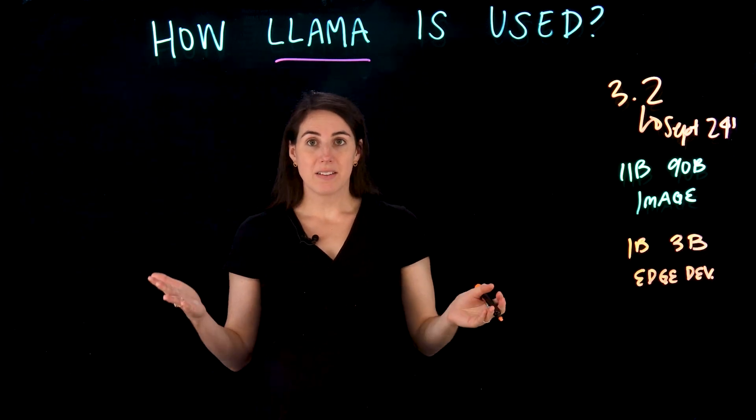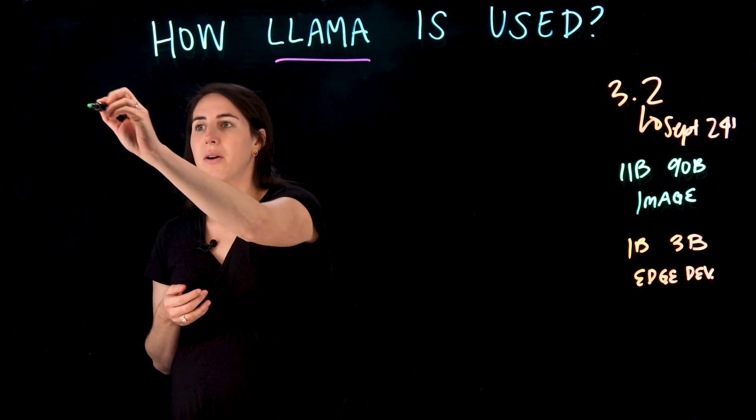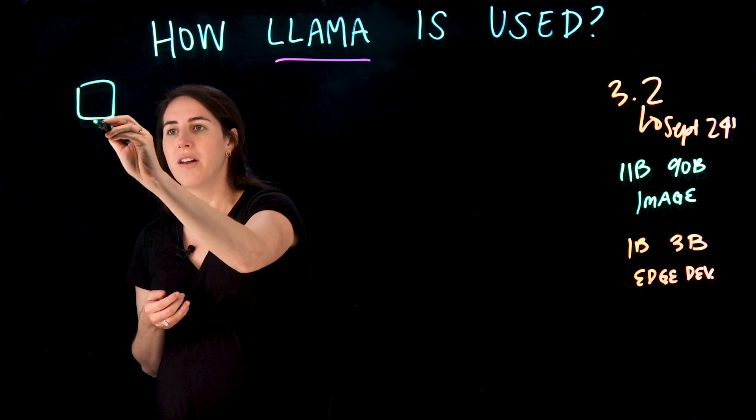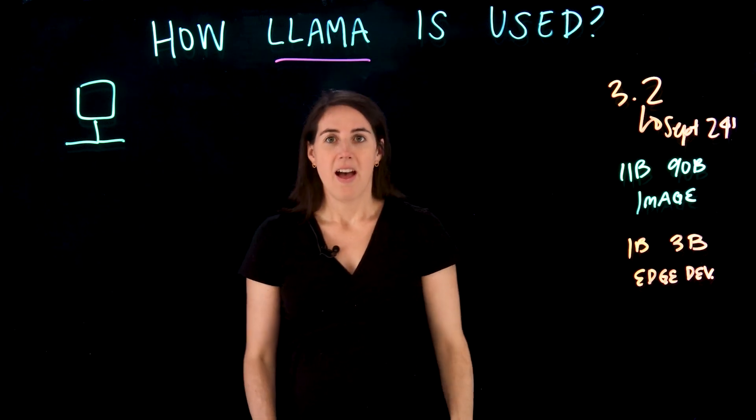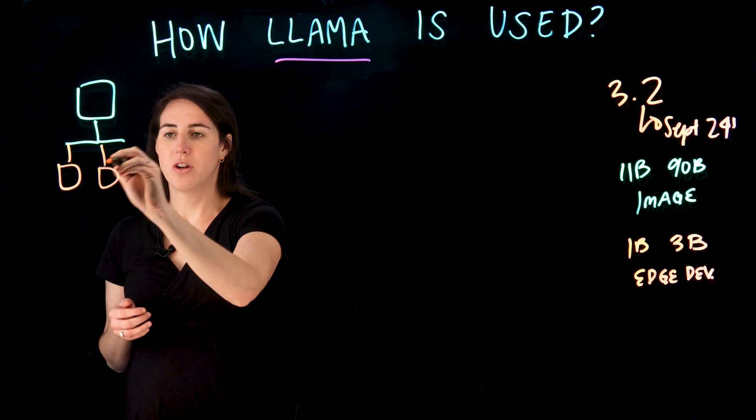What that means is these models make it possible to build personalized, on-device applications that respect user privacy — models that can go directly on your phone. And to make it even easier for developers to work with the Llama models, we had something called the Llama Stack introduced. The Llama Stack is a simplified architecture approach which allows you to work with agents to build out these different Llama models and integrate them in applications.